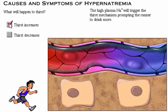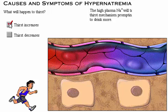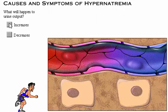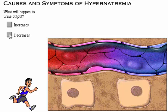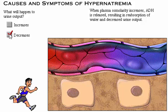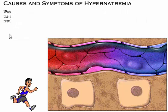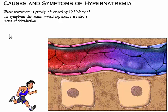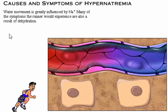The high plasma sodium will trigger the thirst mechanism, prompting the runner to drink more. When plasma osmolarity increases, antidiuretic hormone is released, resulting in reabsorption of water and decreased urine output. Remember that water movement is greatly influenced by sodium. Many of the symptoms the runner would experience are also a result of dehydration.